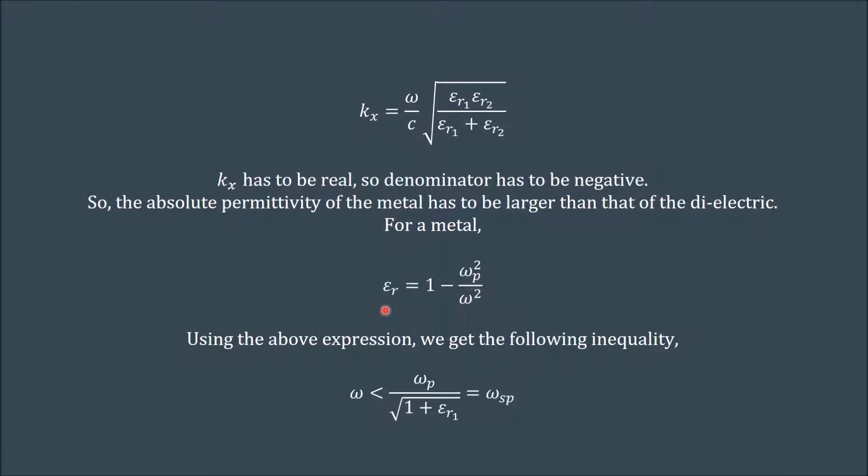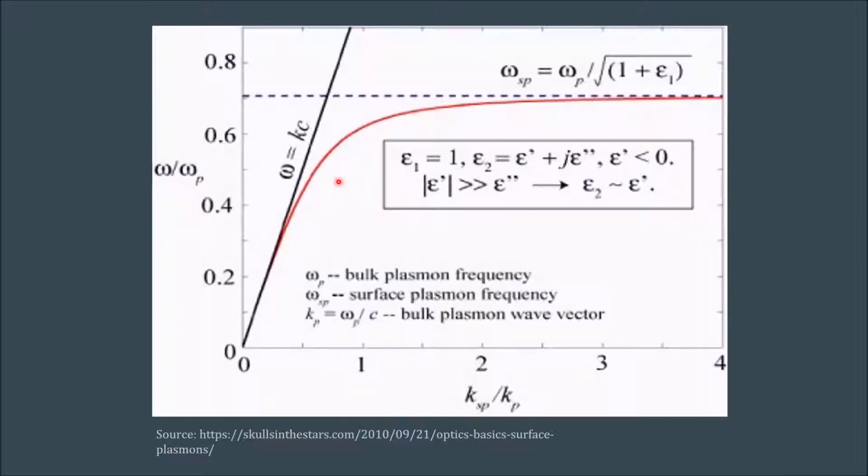Now for a metal, we know the relation between the relative permittivity and its plasma frequency. Using the above expressions, we get the following inequality where omega is smaller than ωp upon root of 1 plus εr1. Value on this RHS is also called ωsp. Now an important point to note here is that not only should omega be smaller than ωsp, it should also not be very small because in that case the decay lengths become very large in the metal and the surface plasmon cannot be supported.